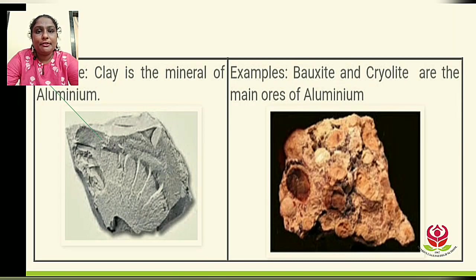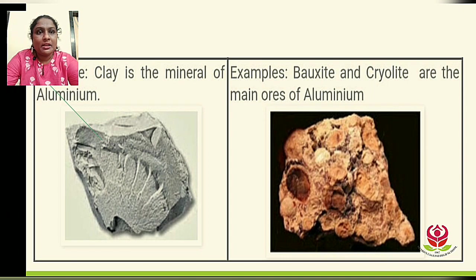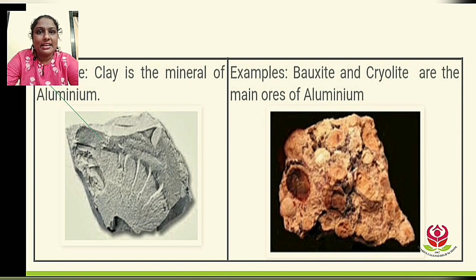To explain this definition better, here is an example. Clay is a mineral of aluminium. Bauxite and cryolite are the main ores of aluminium. Both contain aluminium, but bauxite is called an ore because you can extract aluminium more profitably and conveniently from it. You cannot extract aluminium from clay, so clay is a mineral, while bauxite and cryolite are the main ores of aluminium.